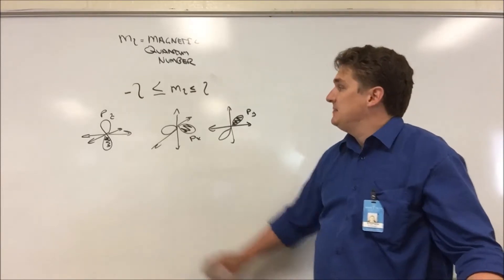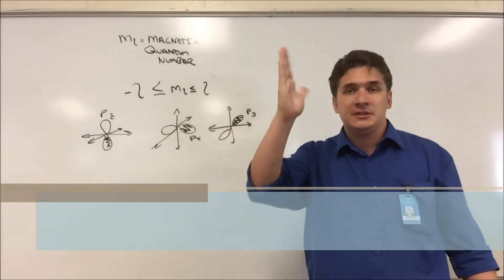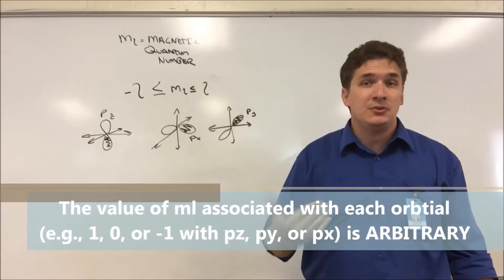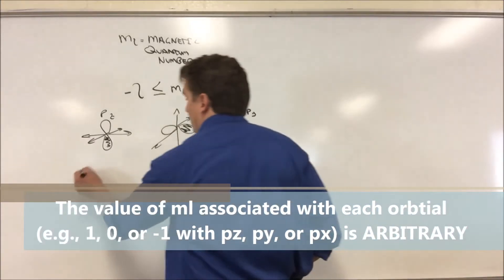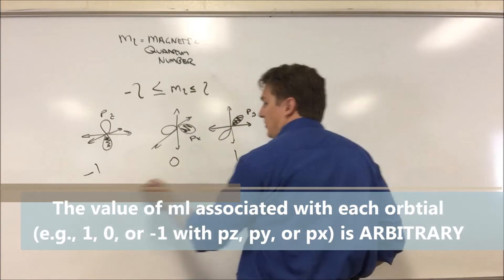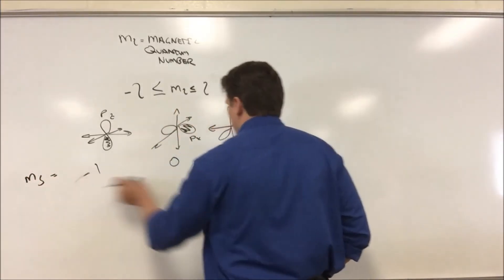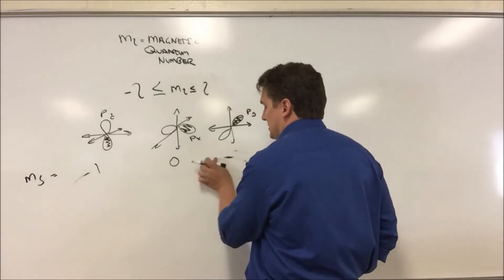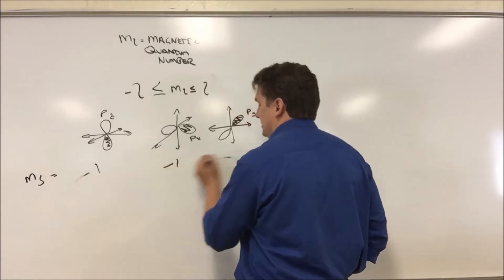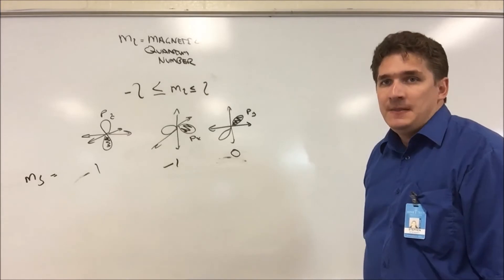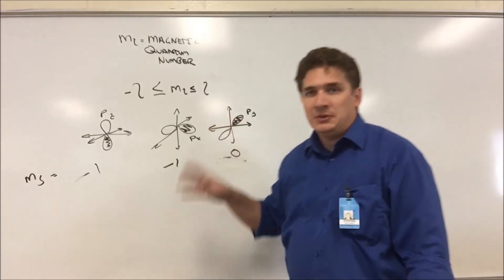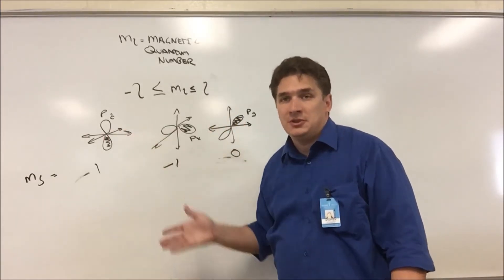The assignment of p_z, p_x, and p_y to the p orbitals aligned along the z, x, or y-axis is purely arbitrary. We could say this is minus 1, 0, and 1 for our m_l value. Or we could say that this is 1, 0, negative 1. Or we could say that this is 1, negative 1, 0. It doesn't matter as long as you're consistent. The only thing your magnetic quantum number is really doing is telling you which of the degenerate orbitals you're in.